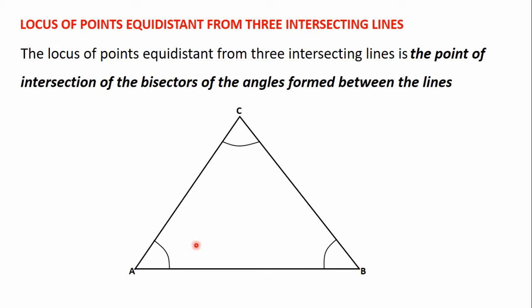What this means is that to get the locus of points equidistant from the line AB, the line AC, and the line BC, we will have to bisect the angle formed at point A, bisect the angle formed at point B, and bisect the angle formed at point C. Those three bisectors will meet at a point, and their point of intersection will give us the locus of points equidistant from the three lines.